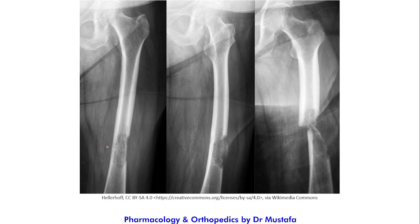In this example, there is a lesion in the shaft of the femur with ill-defined margins. Multiple X-rays of the same lesion taken at different times show that the cortical density on one side is progressively decreasing, eventually leading to a fracture. This patient has breast cancer that has metastasized to the femoral bone.